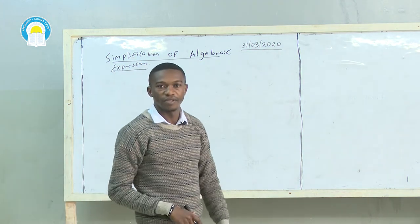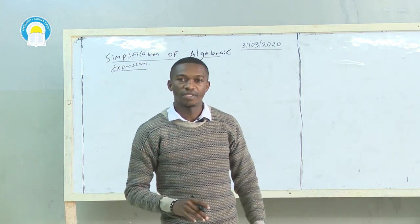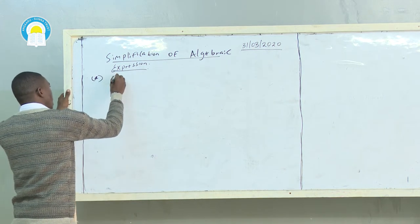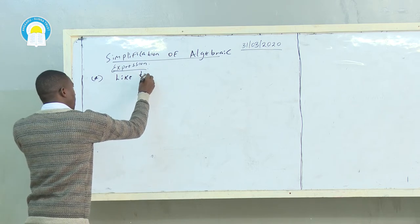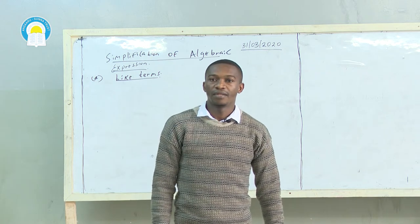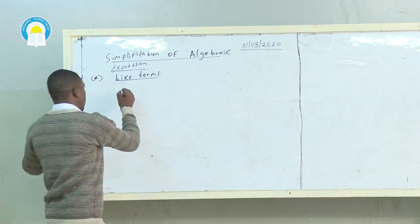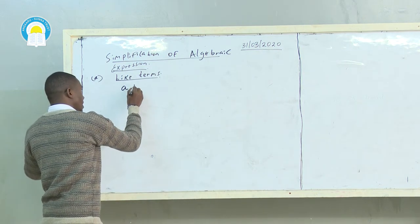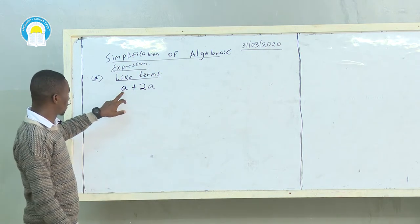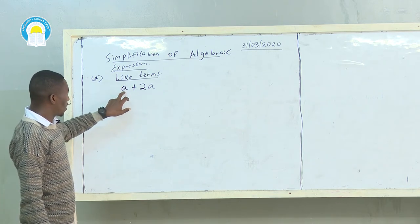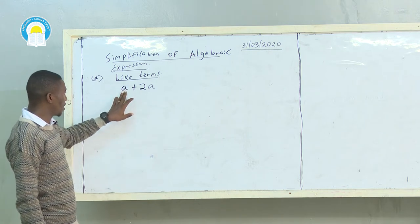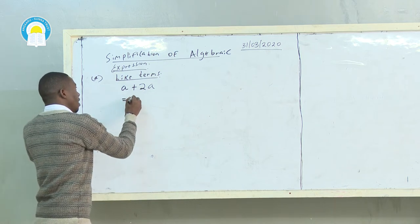In simplification of algebraic expressions, the first thing you need to know is like terms and unlike terms. Like terms are numbers or letters that resemble each other. For example, when we have A plus 2A, these are like terms because both have the letter A. So A plus 2A equals 3A.